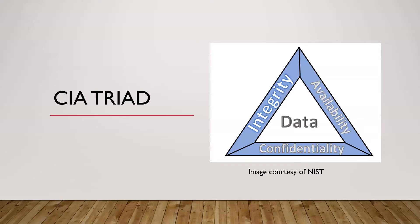CIA triad stands for confidentiality, integrity, and availability. Confidentiality is about making sure that the right people, the right applications, and the right systems are getting access only to the things they're authorized to see — whether that's data or anything else — while preventing unauthorized access. The whole goal is to help protect sensitive data from unauthorized access, disclosure, or theft.